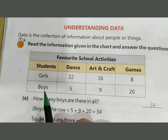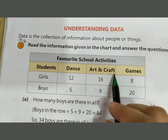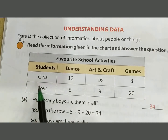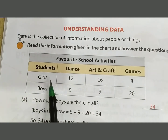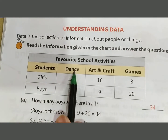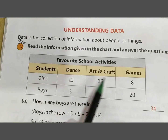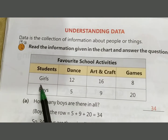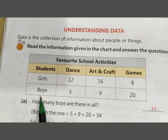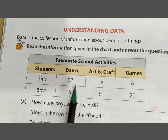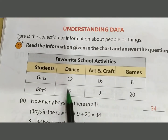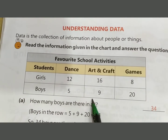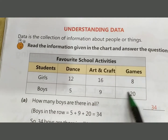The chart shows students, dance, art and craft, and games. There are girls and boys. Girls in dance: 12, girls in art and craft: 16, girls in games: 8. Boys in dance: 5, boys in art and craft: 9, boys in games: 20.